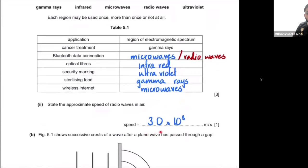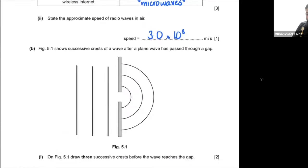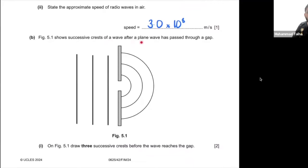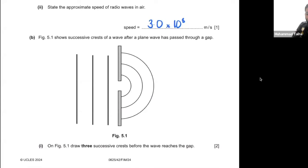The approximate speed of radio waves in air is 3×10⁸ m/s. Figure 5.1 shows a wave after passing through a gap; draw three successive crests before the wave reaches the gap as straight plane wavefronts. The key principle: diffraction does not change the wavelength, so the spacing between crests before the gap should equal the spacing after. Mark both as lambda if your drawing looks slightly off.